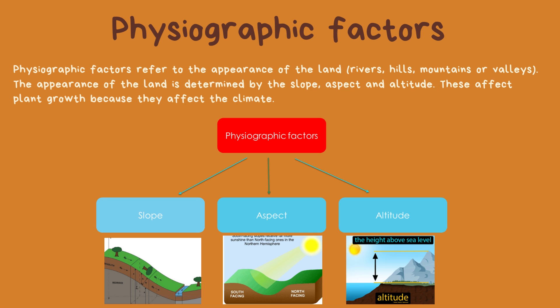Looking at slope: this is the measure of the steepness of the land. The steeper the slope, the more runoff — meaning that when there is heavy rain, water doesn't enter the soil but runs down the slope. Steeper slopes therefore support less plant growth. There are three main types: flat land, gentle slope, and steep slope. Then we have aspect, which is the direction in which the slope faces — this has to do with the sun. Then we have altitude, the height above sea level, which can cause climate to change over very short distances.